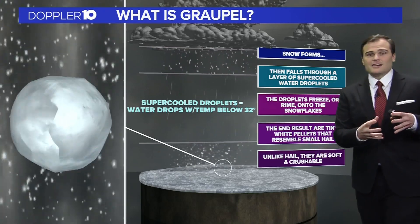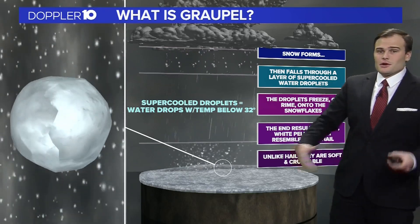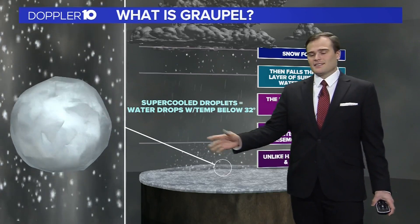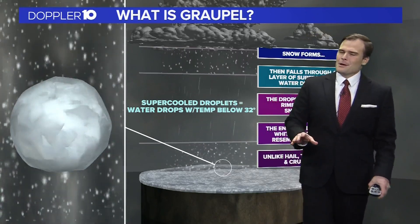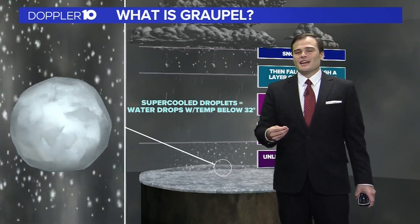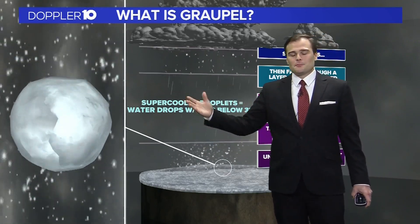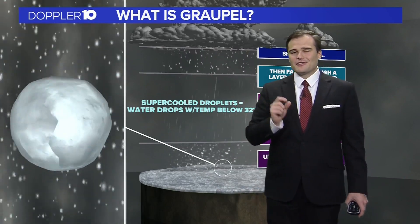What happens is the droplets freeze when they encounter the snowflakes as they're falling — they collect onto them, and the end result are these white pellets, kind of similar to sleet but very different in texture. Not only that, in appearance they look like tiny snowballs.